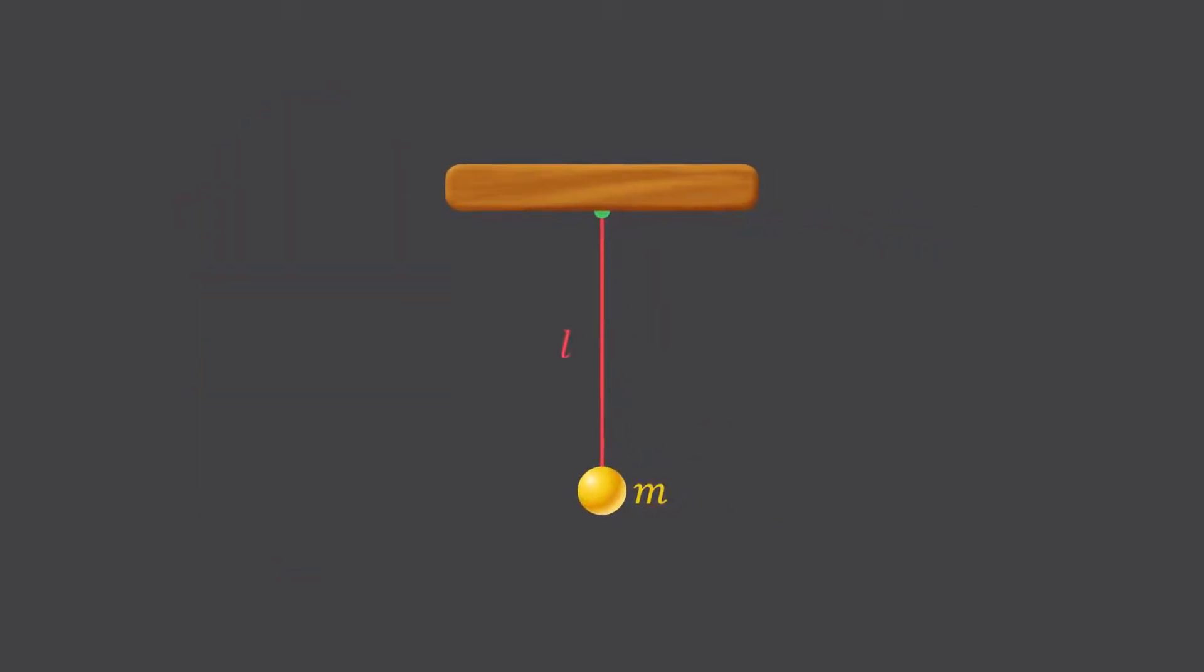At the mean position, which we will denote as O, there are no net forces acting on the bob of mass m. Its weight mg acting downwards is cancelled out by the tension in the string acting upwards.